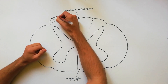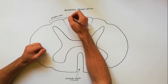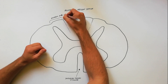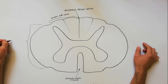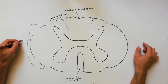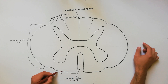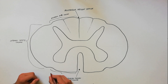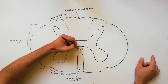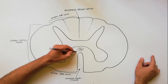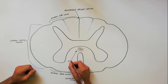The posterior white column is between the posterior median septum and the posterior horn. The lateral white column is between the anterior and posterior horns. The anterior white column is located between the anterior median fissure and the anterior horn. The anterior white columns are joined together by the anterior white commissure.